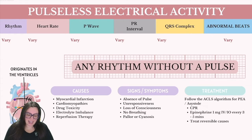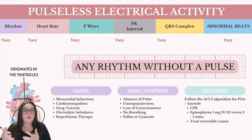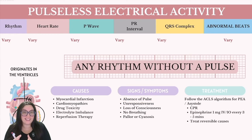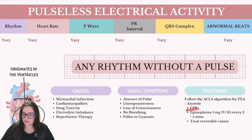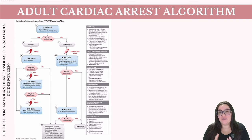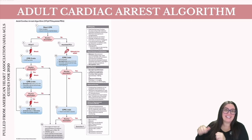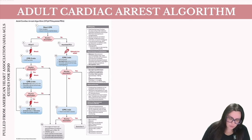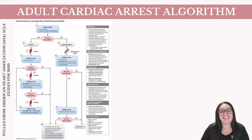When it comes to rhythm identification for PEA, it's variable because we really don't know what the rhythm will be. The biggest key when it comes to signs and symptoms is you're not going to have a pulse. For treatment, we follow the same ACLS algorithm as asystole: CPR, epinephrine, and treating those H's and T's if applicable. Here is the ACLS algorithm for adult cardiac arrest covering ventricular fibrillation, pulseless ventricular tachycardia, asystole, and PEA — follow one side for VFib/pulseless VTAC, or the other side for asystole and PEA.